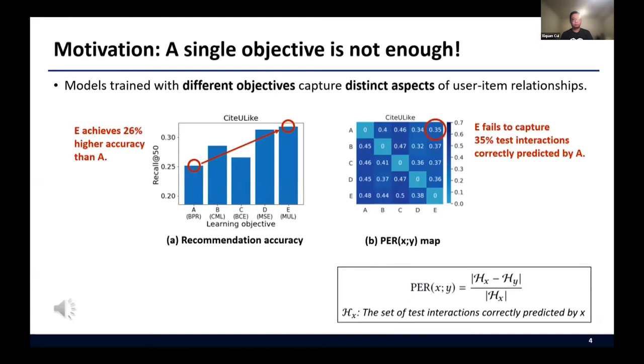We analyze models optimized by the various learning objectives and observe that models trained with different objectives capture distinct aspects of user-item relationships. Let me introduce a simple metric named PER. PER quantifies the knowledge of user-item relationships captured by the model X but failed to be effectively captured by the model Y. From the left figure, which summarizes the recommendation accuracy, we can see that E achieves significantly higher accuracy than A.